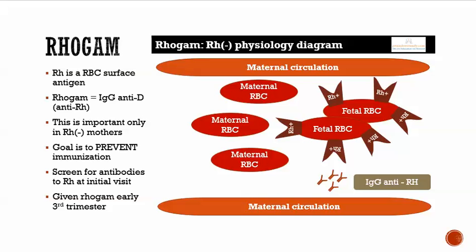This is a very brief ProcedureReady.com talk about RhoGAM and RH physiology in general, really being RH negative and what that means. RH is a red blood cell surface antigen. If you think about it the same way you would ABO, ABO incompatibility, you can also have RH incompatibility.